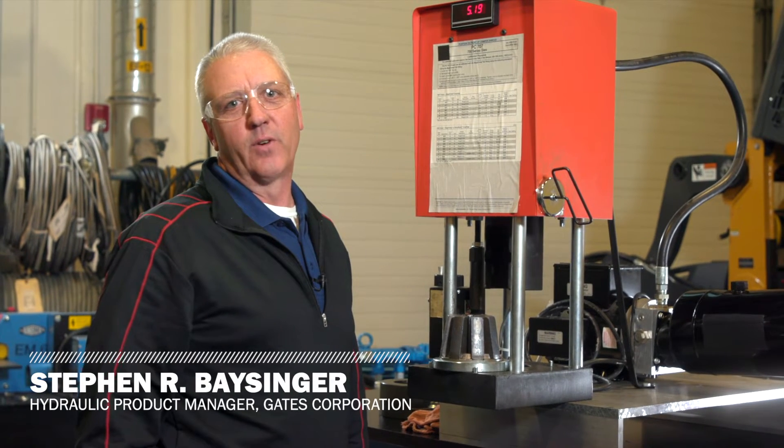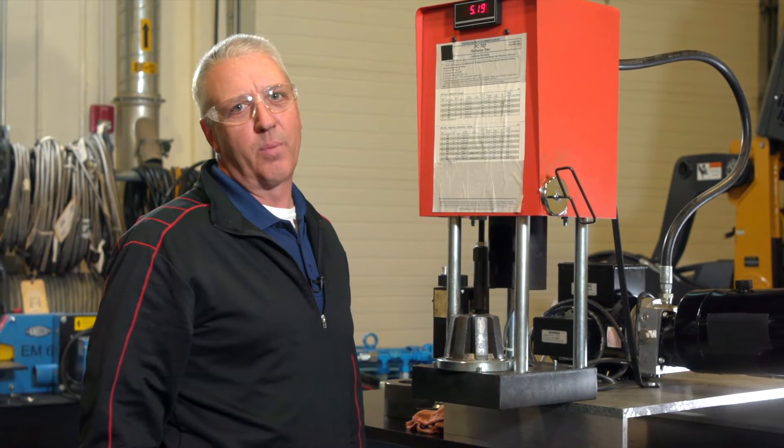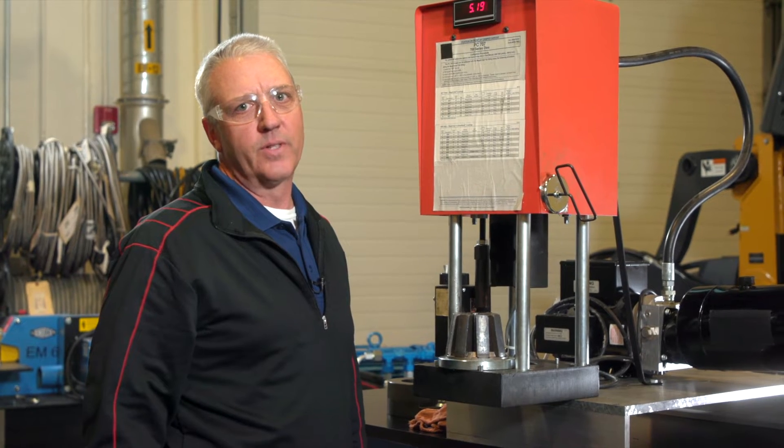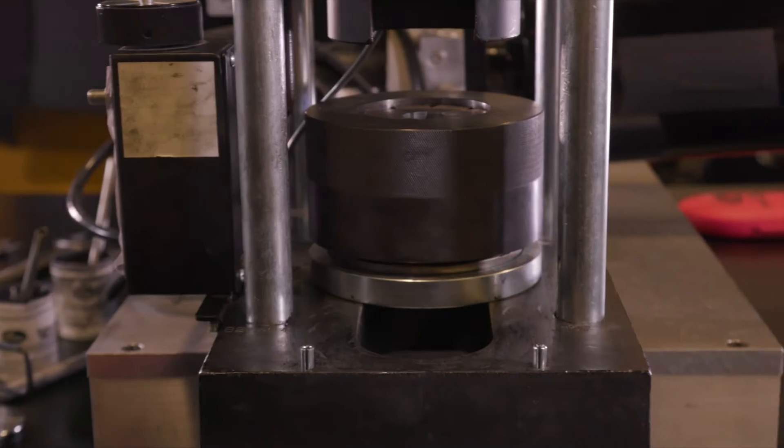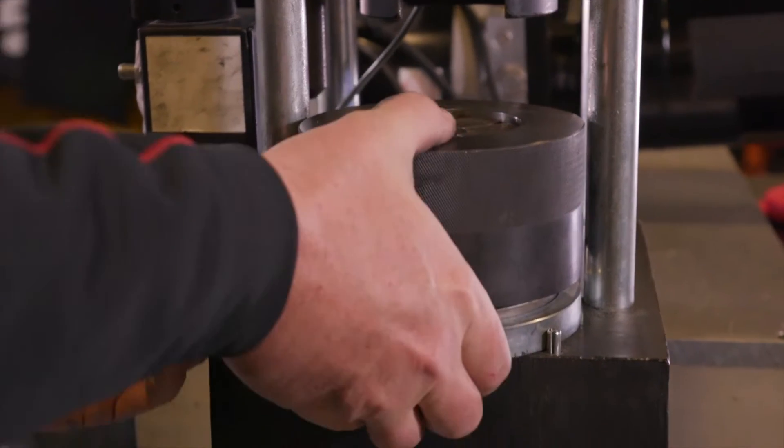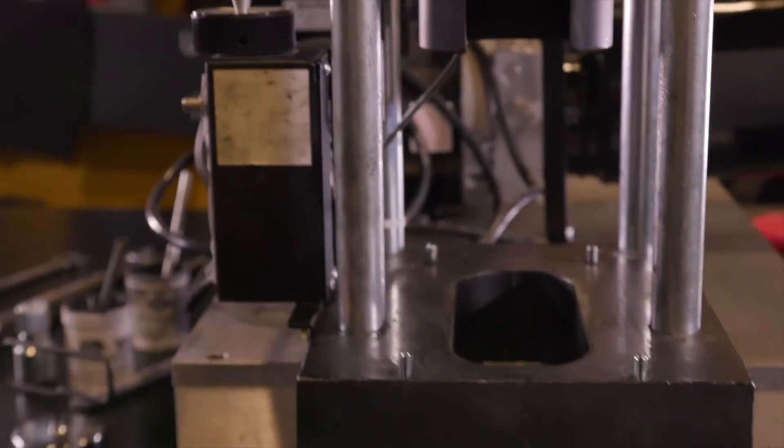Calibrating the Gates PC-707 crimper is a simple and necessary process to ensure proper and safe crimping. First, make sure the area under the pusher cup is clear of the die cone or die sets.